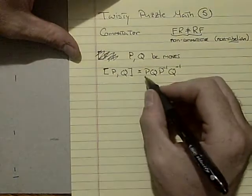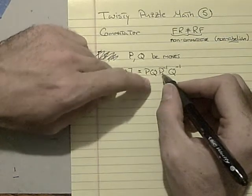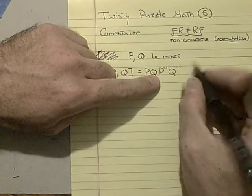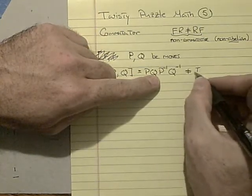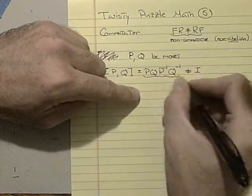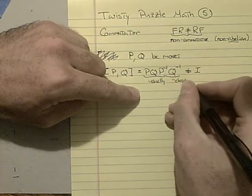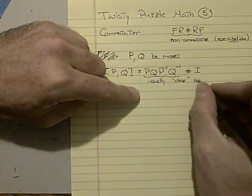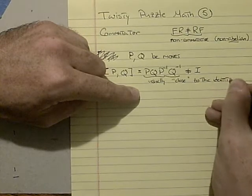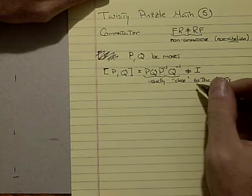Now, if this was a commutative group, you could just rearrange the order and P and P inverse would cancel, and Q and Q inverse would cancel, and this would give you the identity. But it is not, because the order matters. However, these are usually close, in some sense, to the identity, meaning they don't mess with too much. And they're usually a good place to start for finding moves on the cube.